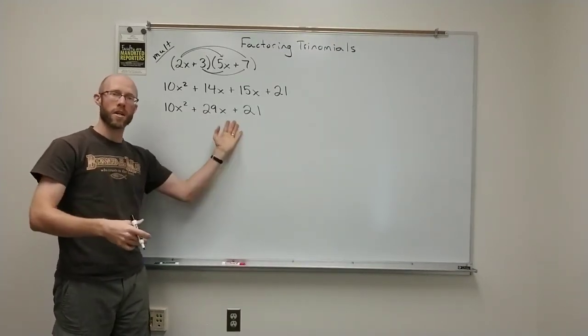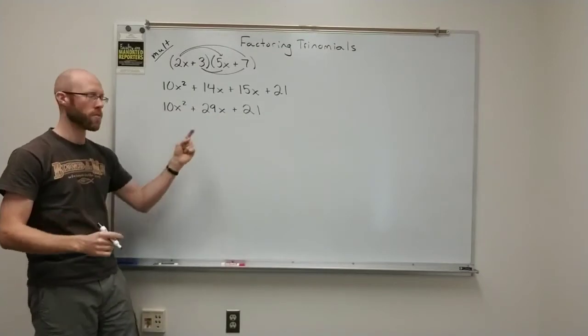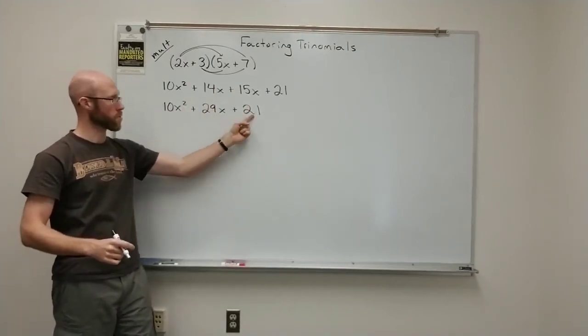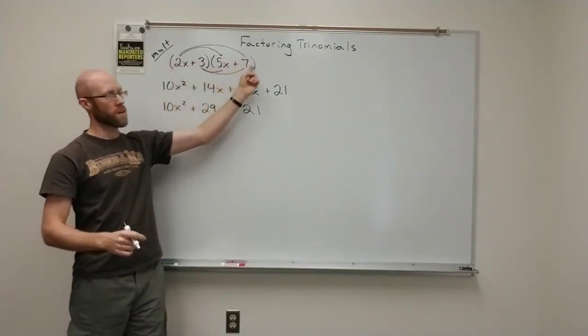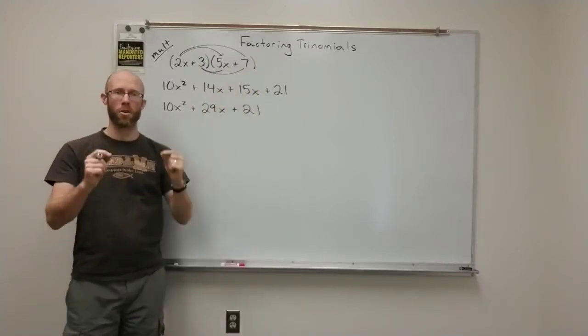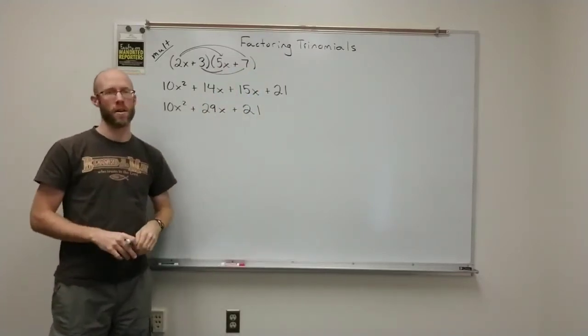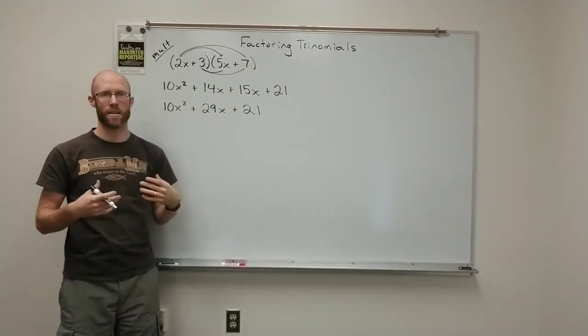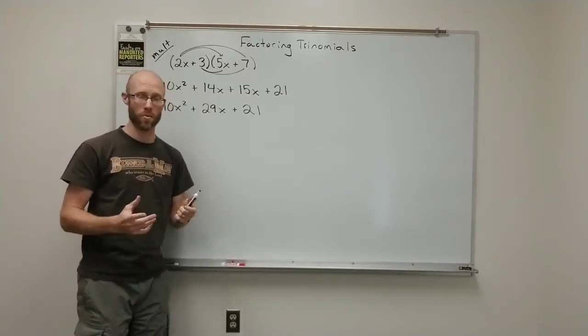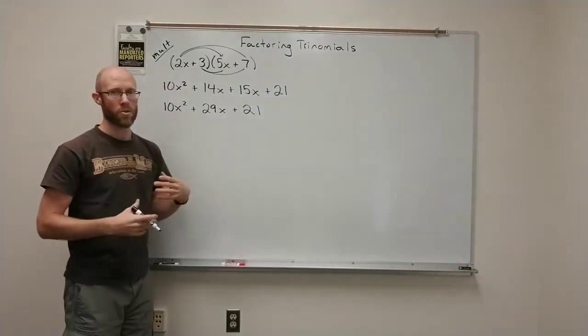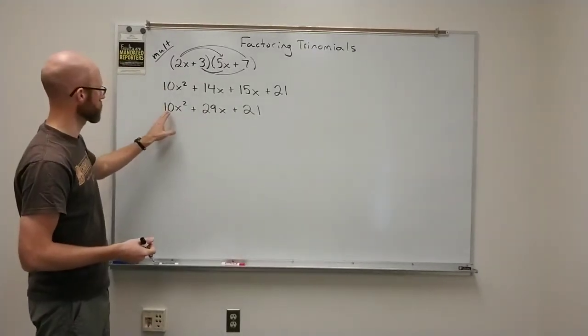Now, if I wanted to factor this, I'd have to somehow get from 10x² plus 29x plus 21 back to this factored form and have all the coefficients in the right spots. And that's not a super simple task. It's not even really straightforward. You can tell some things about the final answer.